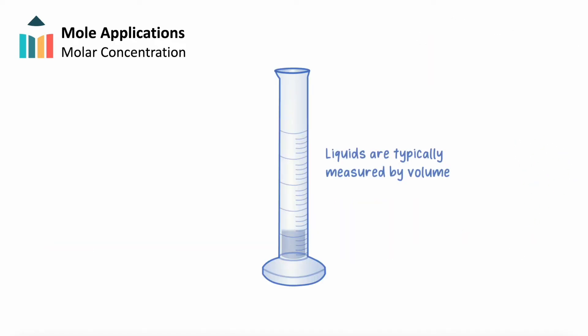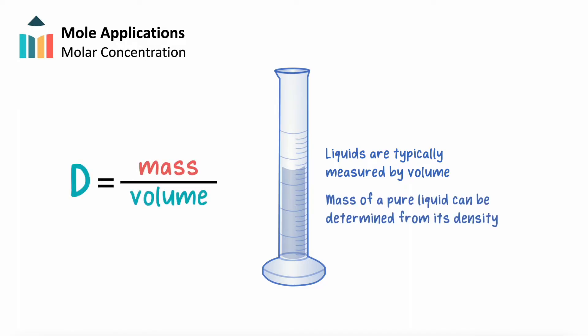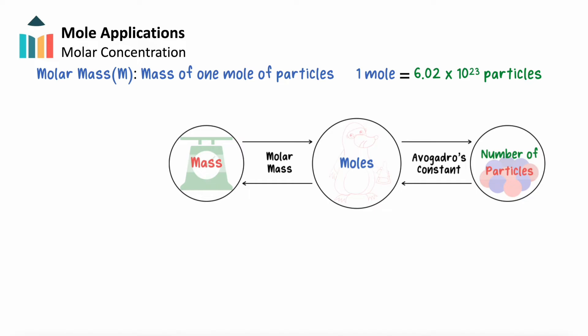Liquids are typically measured by volume. Therefore, the mass of a pure liquid can be determined from its density. Once the mass of a liquid is known, it's easy to determine the moles present, which we can see by adding this to our diagram. Density will act as our bridge between volume and mass of a pure substance.